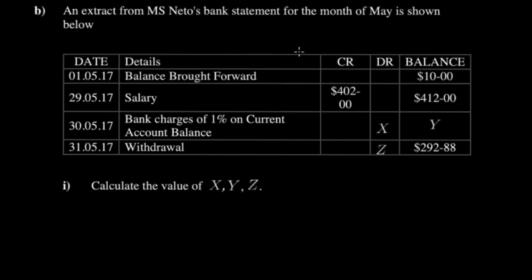Now we have an extract of a bank statement for the month of May. You're asked to calculate x, y, and z. These are non-routine questions — there's no one fixed method, you must read the context. Today it's a bank statement, tomorrow it might be a trial balance. A credit balance means money is coming into your account — a good thing. A debit balance means money is going out — a payment being made.